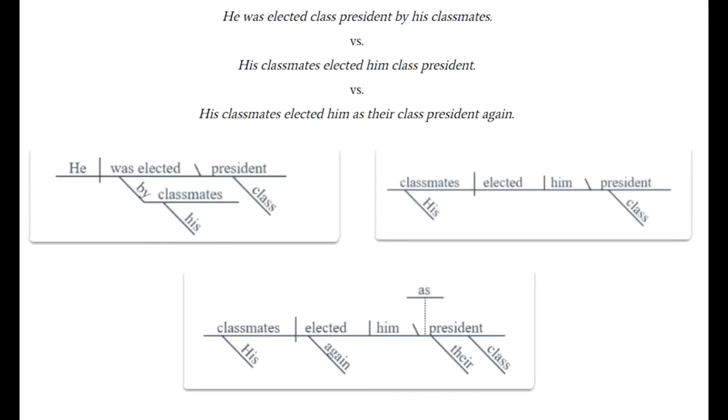Sentence three. His classmates elected him as their class president again. Sometimes we will see this construction, which is similar but slightly different. The second one, again, classmates is the subject. They elected him, him being the direct object, and president is the noun version of the objective complement. Which kind of president? Class president. Whose president? Their president. Then as is an expletive. We'll get into that later, but it sits up there on its own line above the objective complement.